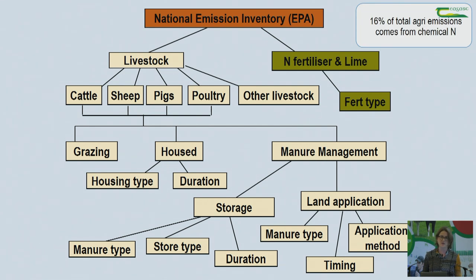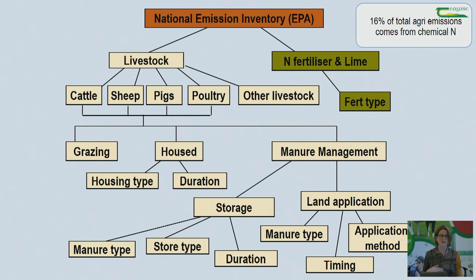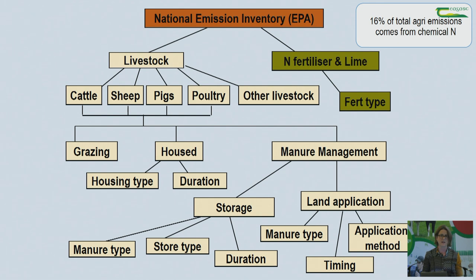At the moment 16 percent of total emissions from agriculture are associated with chemical fertilizer. The reason we're asking you to concentrate on reducing chemical nitrogen use is that we have a very strong suite of technologies available to do that. On the methane side it is much more difficult to shift emissions — things like breeding, feed additives, and age at slaughter will help — but on the fertilizer side we have the technologies now. That's why we're concentrating on nitrogen even though methane makes up nearly two-thirds of emissions.